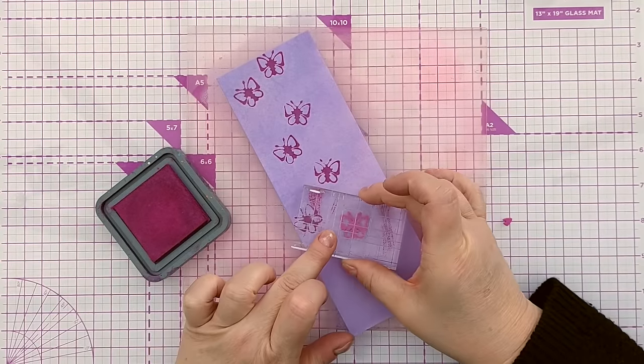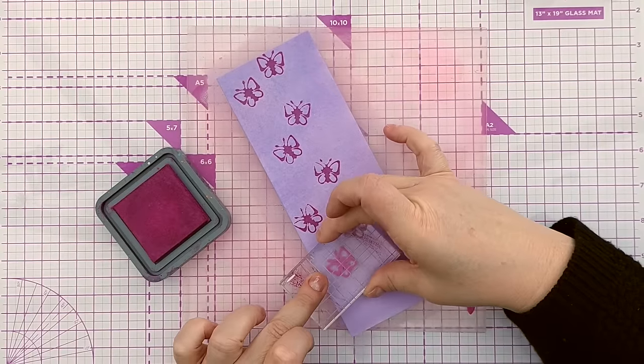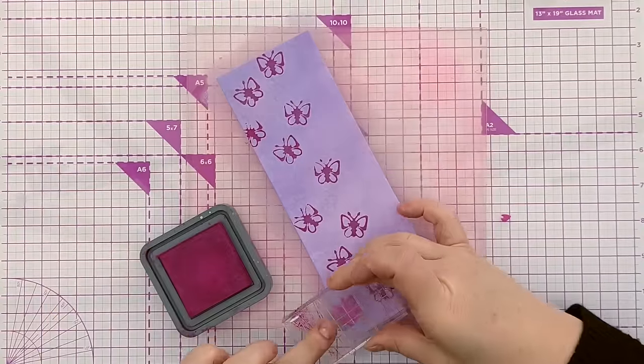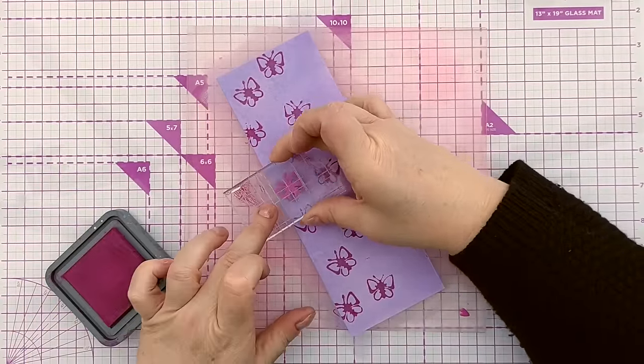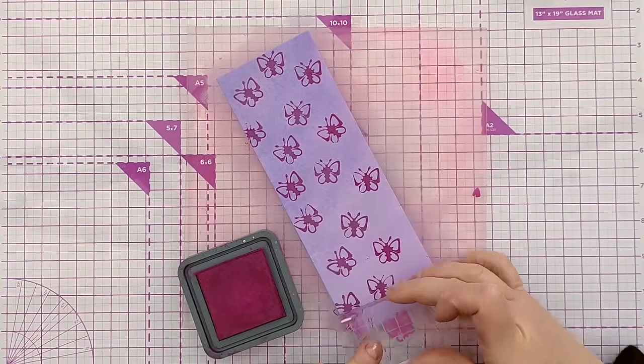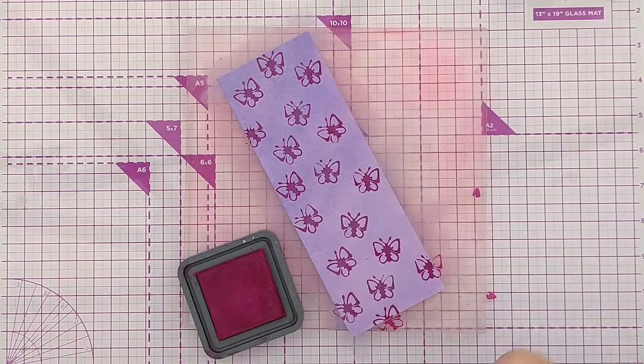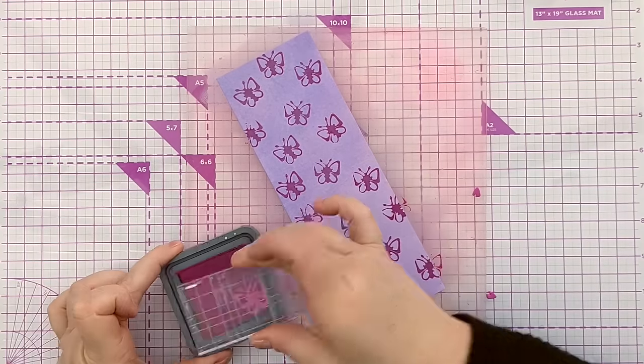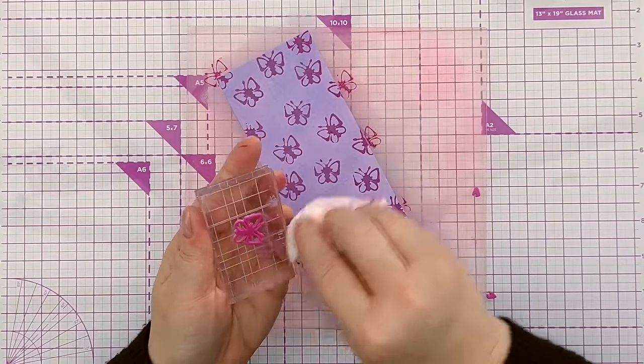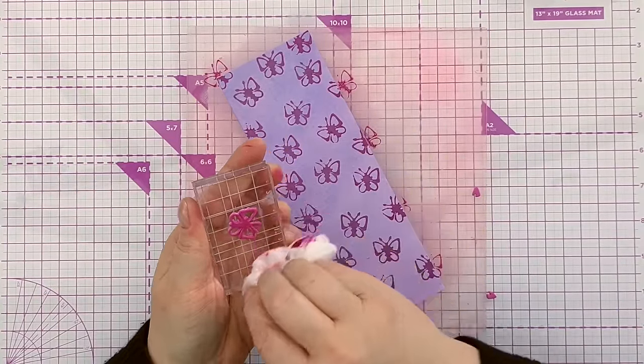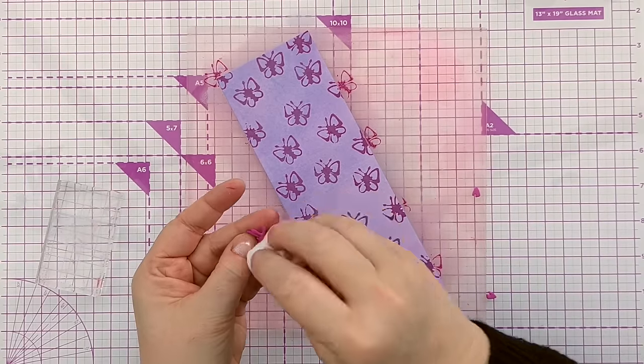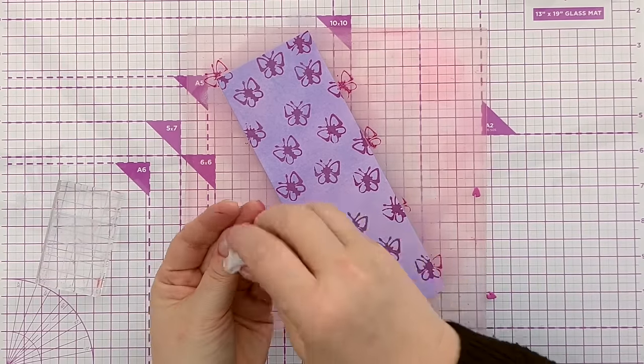I've found distress oxides work with this as do the Catherine Pooler inks. You'll have to experiment with whatever inks you have and you can stamp away. This is Seedless Preserves Distress Oxide. It's looking very bold on there. And you can always keep these little stamps that you make because you can use them again and again. Just maybe give them a wipe to get the glue off and then pop them in a stamp pocket or something.